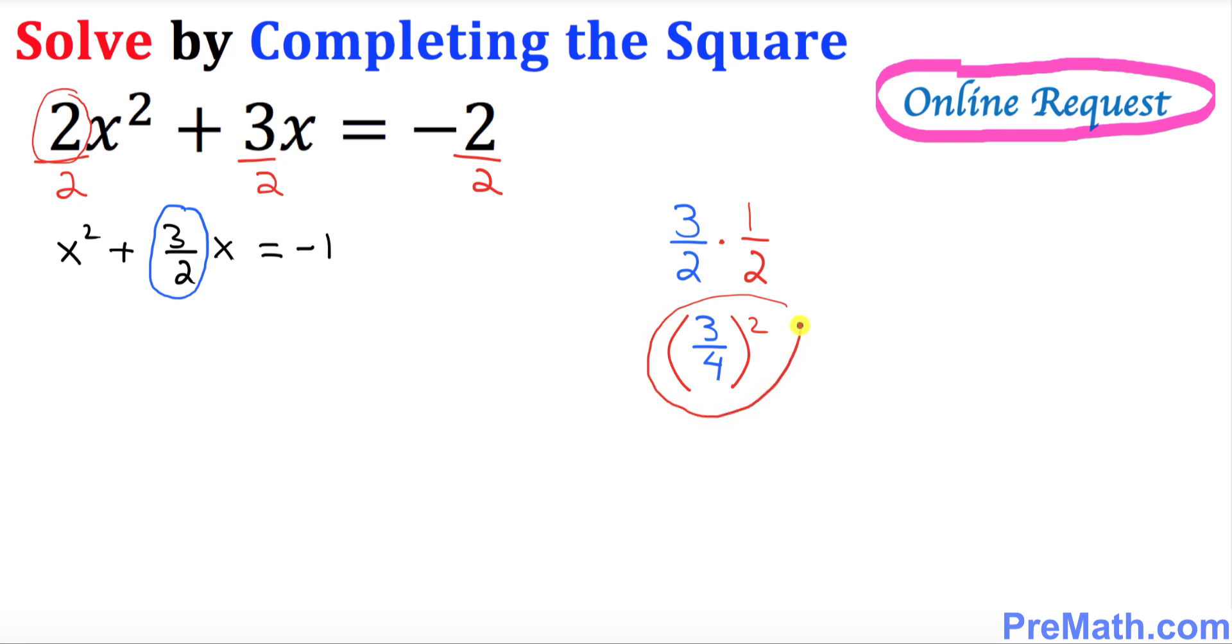So whatever we got, this quantity we're gonna add it on both sides of this equation. So let's go ahead and do that one. So that's gonna be x squared plus 3 over 2 x plus, and then I'm gonna put down negative 1 plus, and now this is what I'm gonna do.